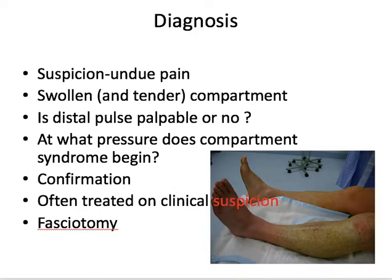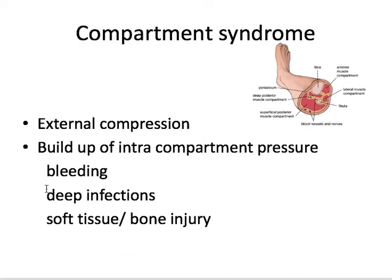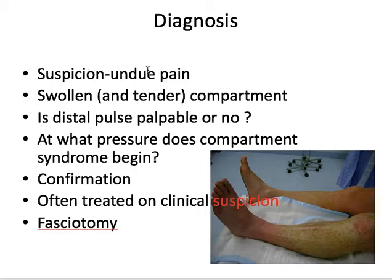For diagnosis, it is very important to be suspicious. All these conditions will have pain within the compartment, but if there is very severe undue pain with the compartment being swollen and tender, you must be suspicious of compartment syndrome. Now, what about the distal pulse — is it palpable or not? Is it an important physical sign to diagnose compartment syndrome?